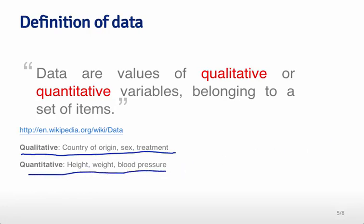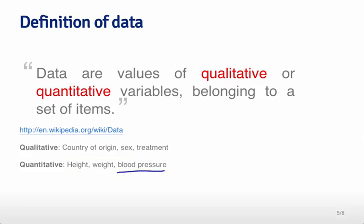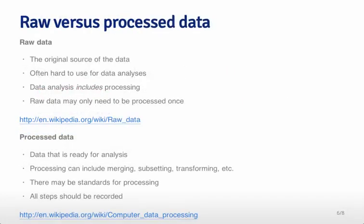A lot of these measurements are actually derived from much lower-level measurements. For example, blood pressure is measured by calculating a pressure measurement, and there are a lot of low-level things that go into calculating that. Those low-level things are the kinds of things we're going to be talking about in raw versus processed data.